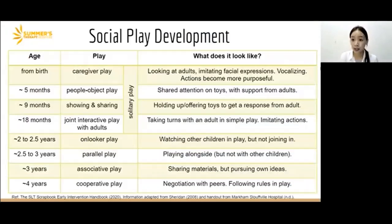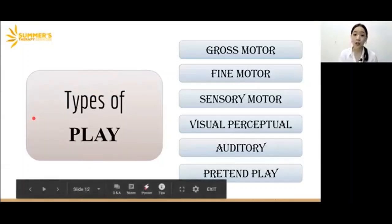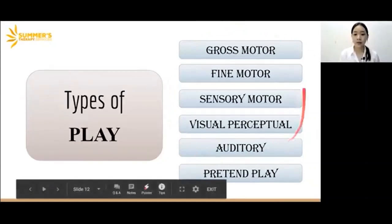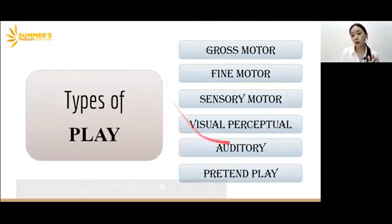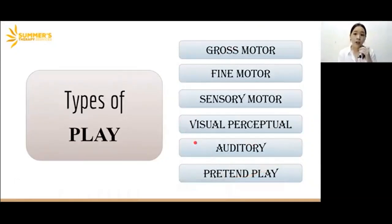Now that we've gone through the play stages — both cognitive and social — let's look at the different types of play activities we can do with children. There are six different types of play: gross motor, fine motor, sensory motor, visual perceptual, auditory, and pretend play. The first five are what children need to learn during that first two years as a foundation to build on pretend play skills later.